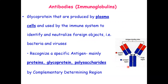The antibody recognizes a specific antigen. The antigen is usually a protein, glycoprotein, or polysaccharide — but it is never a carbohydrate alone, and never a lipid. About 90% of antigens are either protein or glycoprotein, and some may be polysaccharide. The antibody identifies the antigen through a specific region called the antigen-binding region or variable region, because we have both a constant region and a variable region.